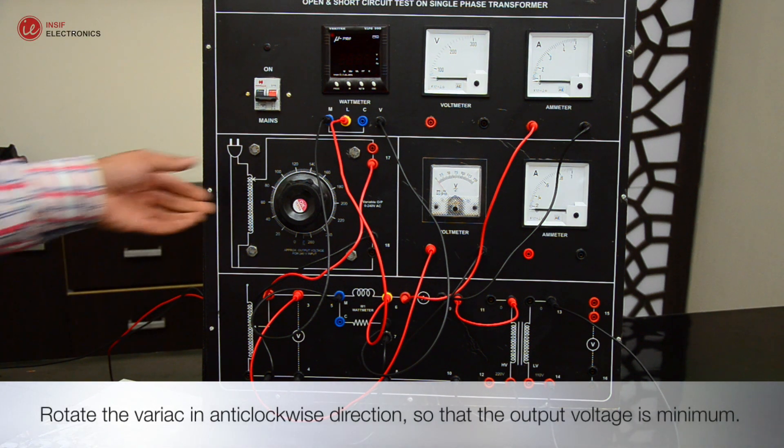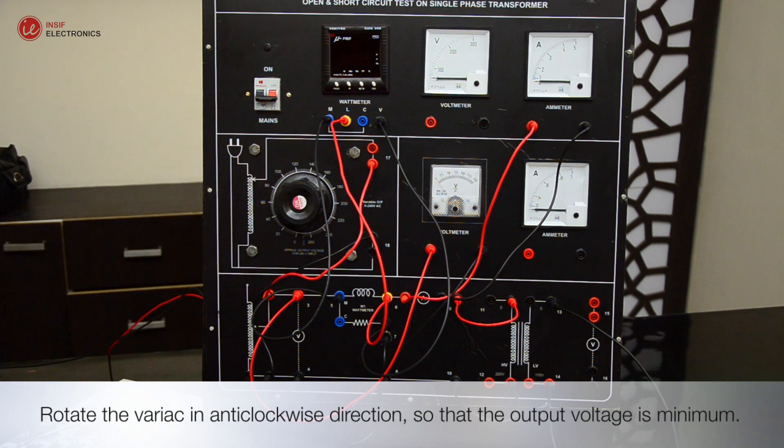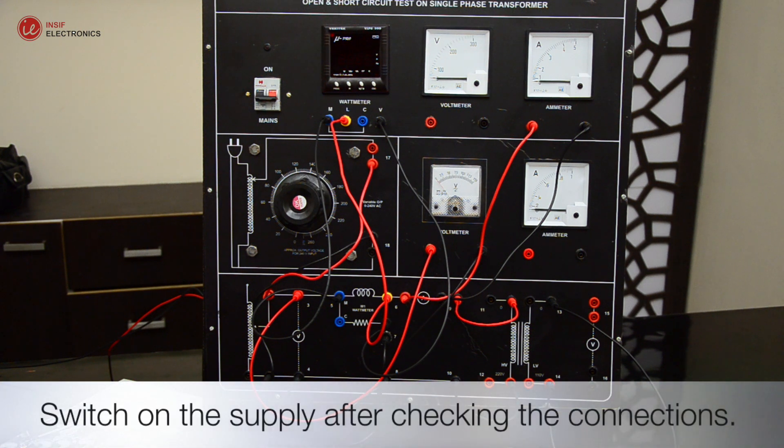Rotate the variac in anti-clockwise direction so that the output voltage is minimum. Switch on the supply after checking the connections.